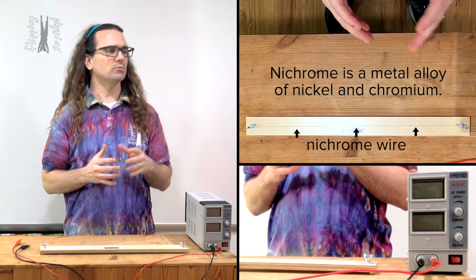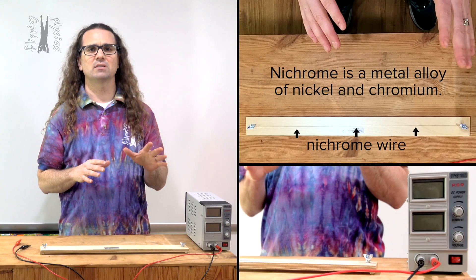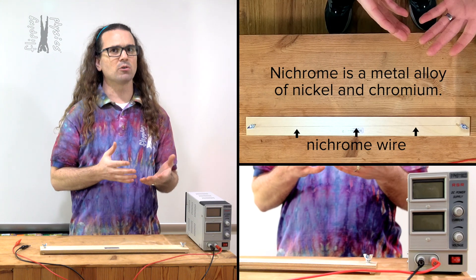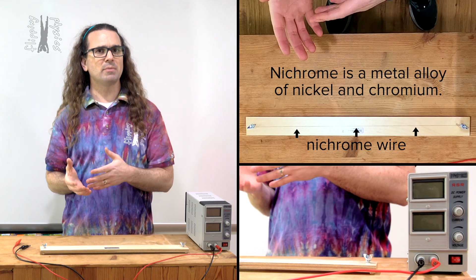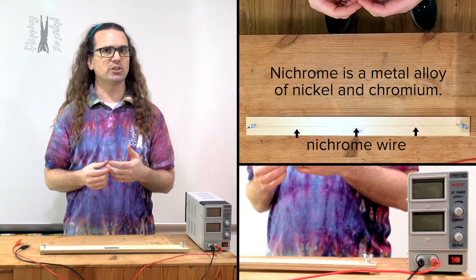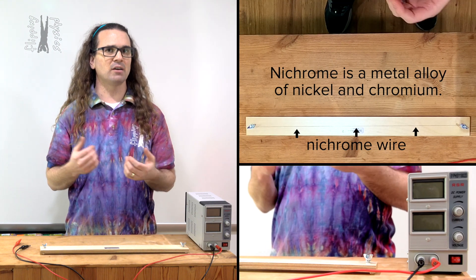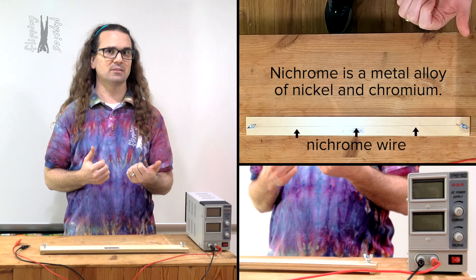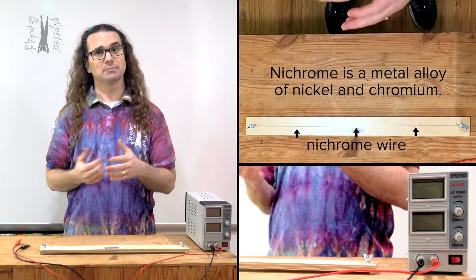What is a nichrome wire? It's a wire made of nichrome. Nichrome is a metal which is an alloy of nickel and chromium, hence nichrome.